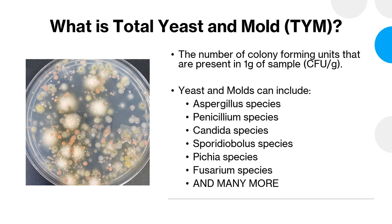With yeast and mold, there are various microbes that can exist. However, some of the most common ones are Aspergillus, Penicillium, Candida, Sporidiobolus, Piccia, and Fusarium species. This is not all of the possible organisms that can be included, and that's one of the reasons why total yeast and mold testing can be difficult. When you are measuring the total amount of something that can be so many different living organisms, you really have to find a method that will allow for the right amount of selectivity and specificity.